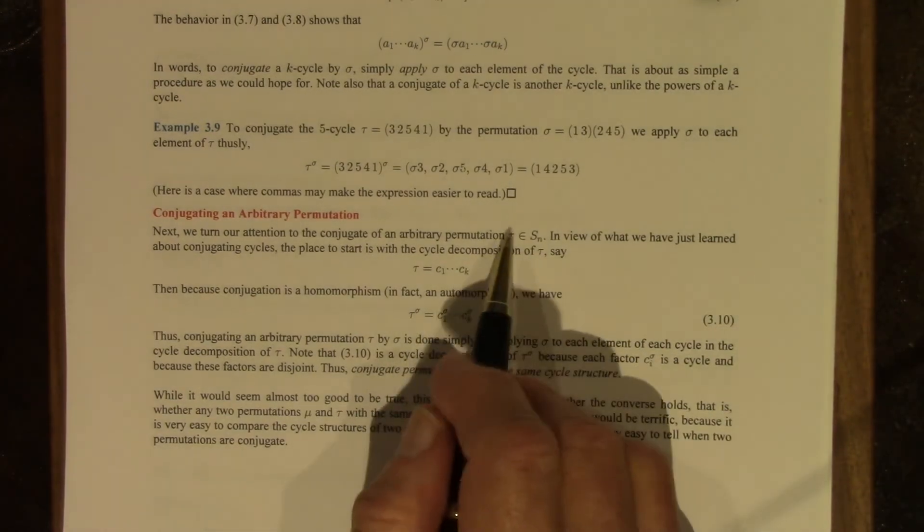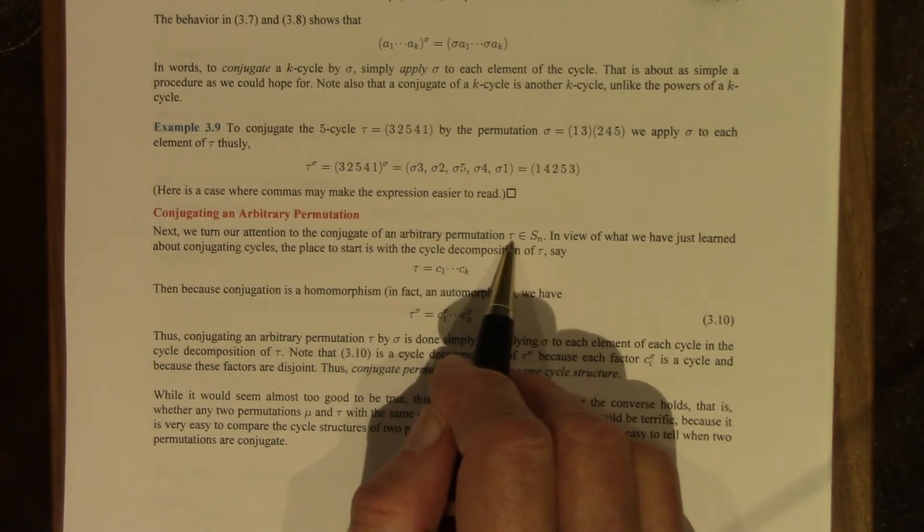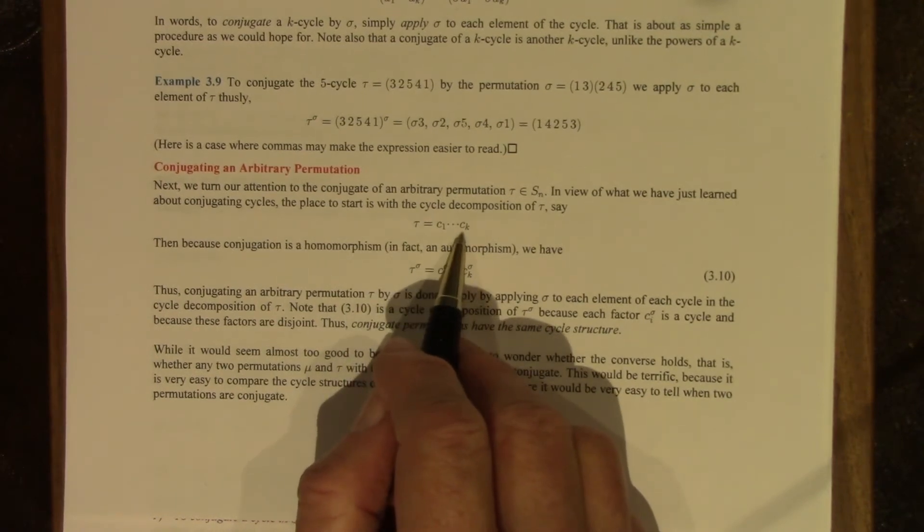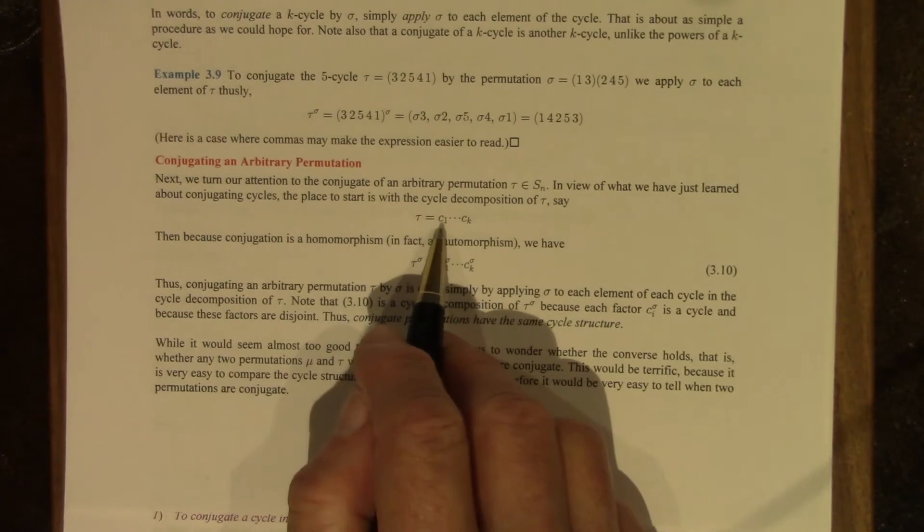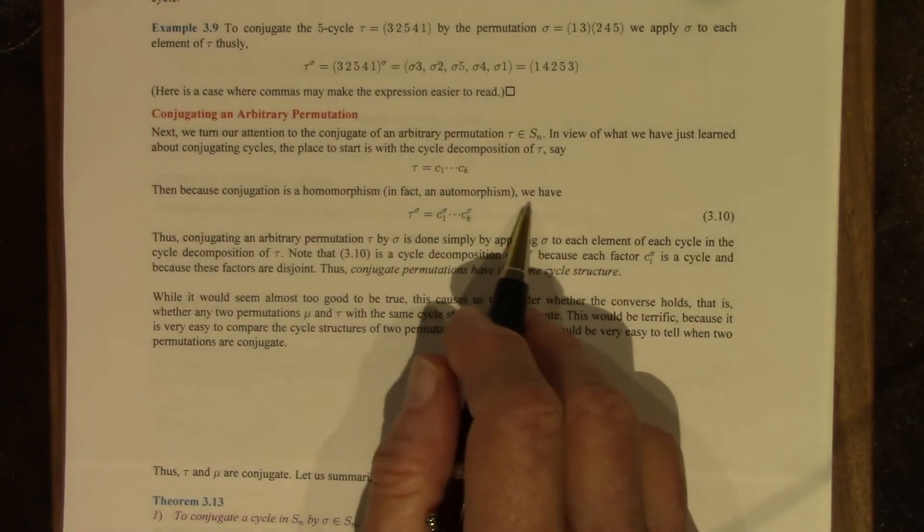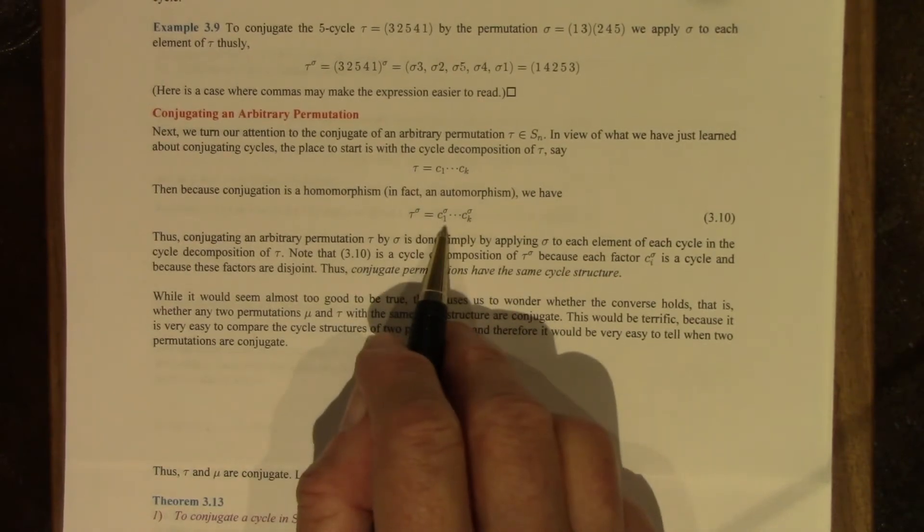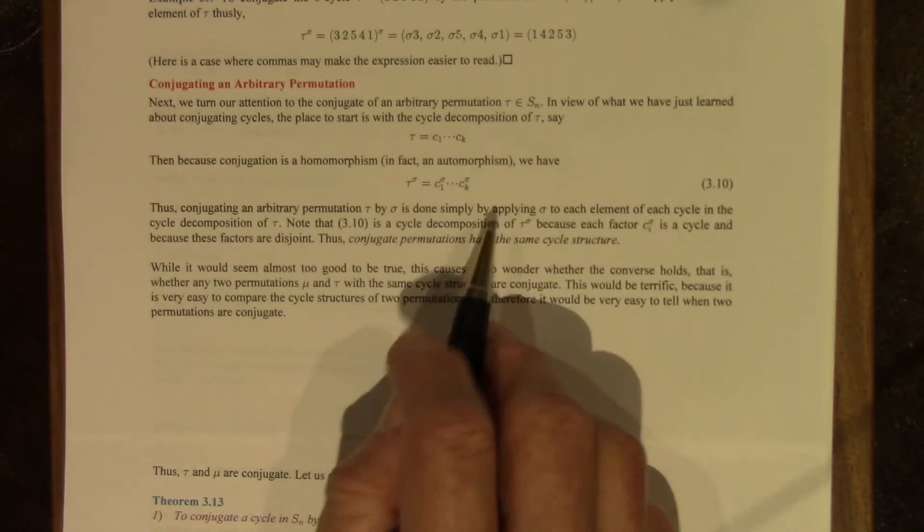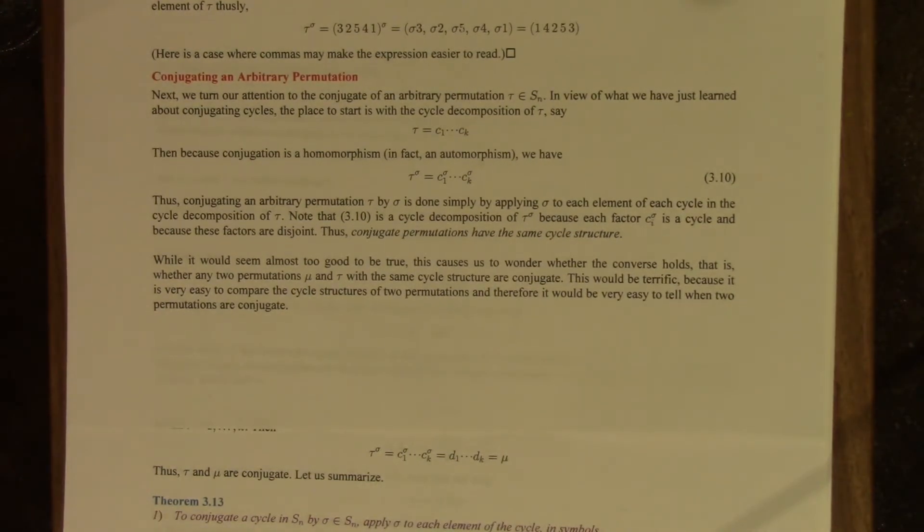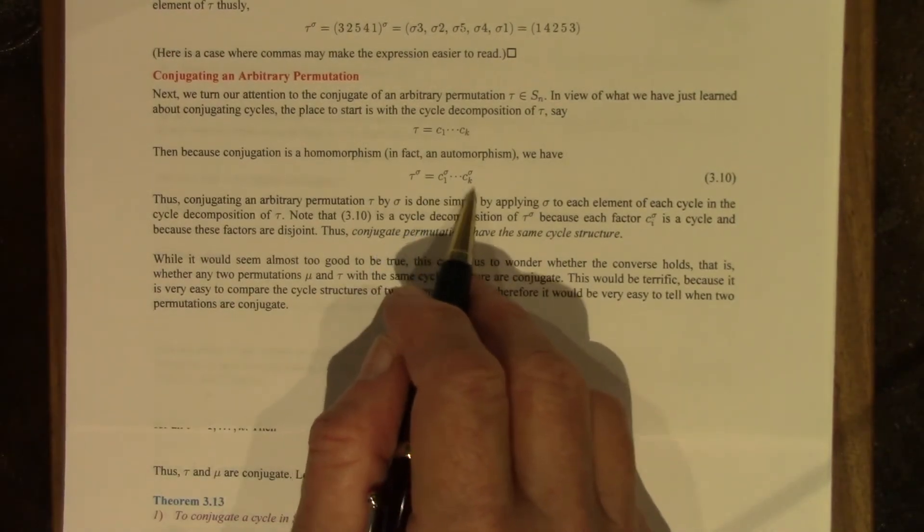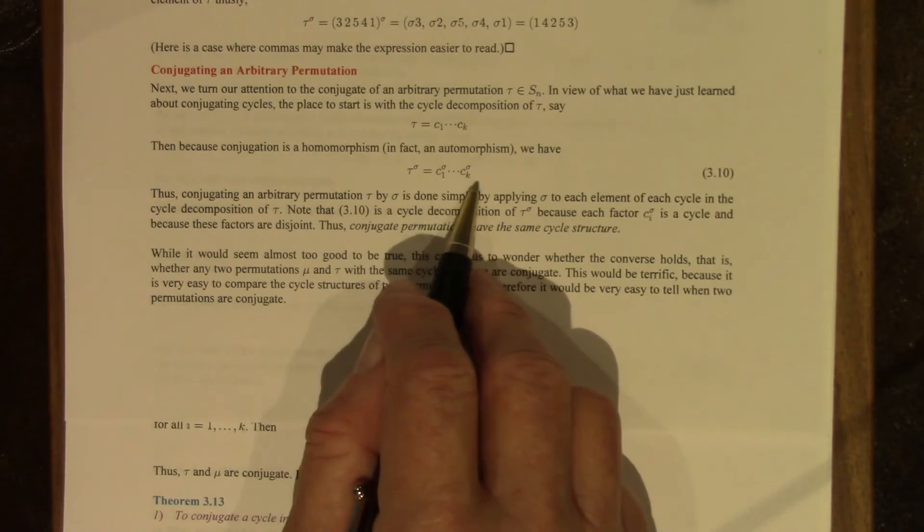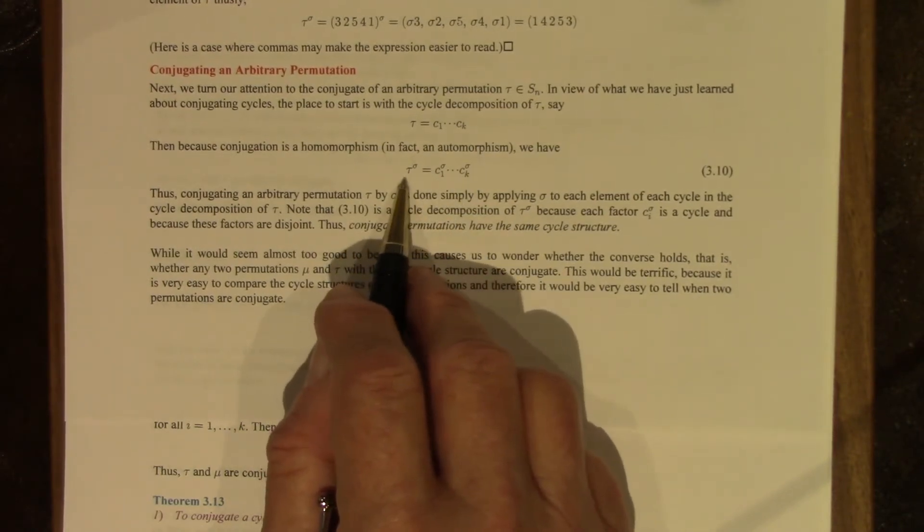What about conjugating an arbitrary permutation tau by a permutation sigma? Well, in view of what we've just learned, it makes sense to first write the cycle decomposition for tau. And because conjugation by sigma is a homomorphism, in fact an automorphism, called an inner automorphism, the conjugate of tau is just the product of the conjugates of each cycle. And these are pairwise disjoint. So this is in fact the cycle decomposition of this conjugate, the conjugate of tau by sigma, because these are pairwise disjoint cycles. Their product is this permutation here, so it's the cycle decomposition.